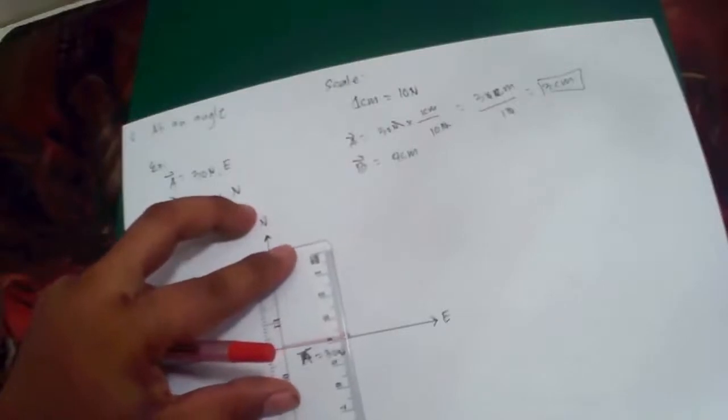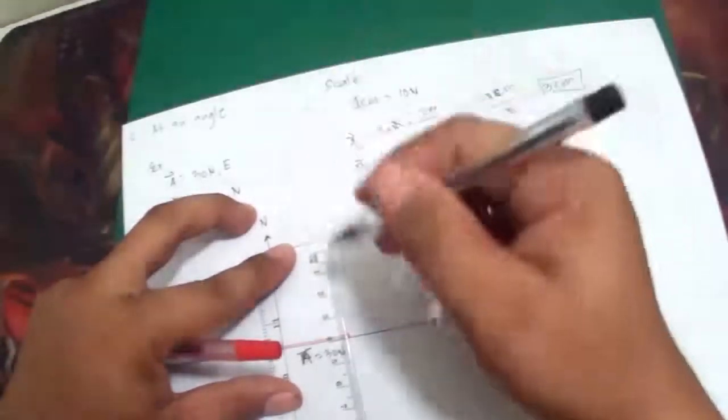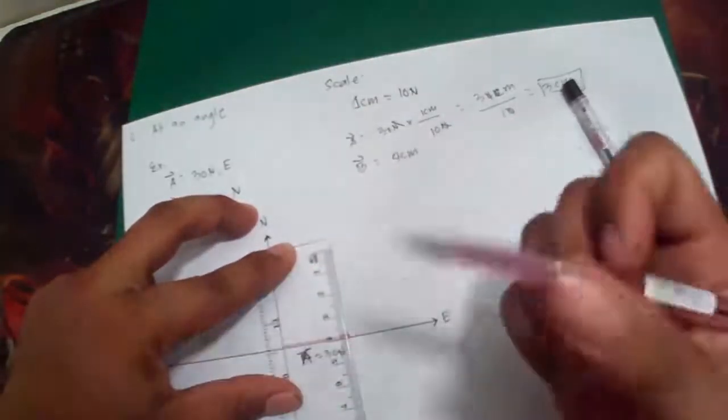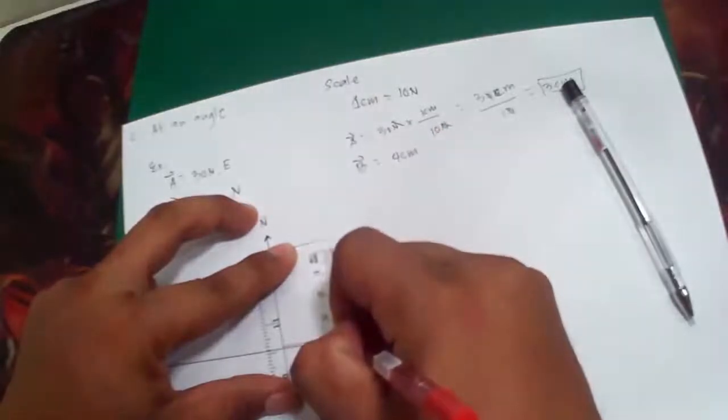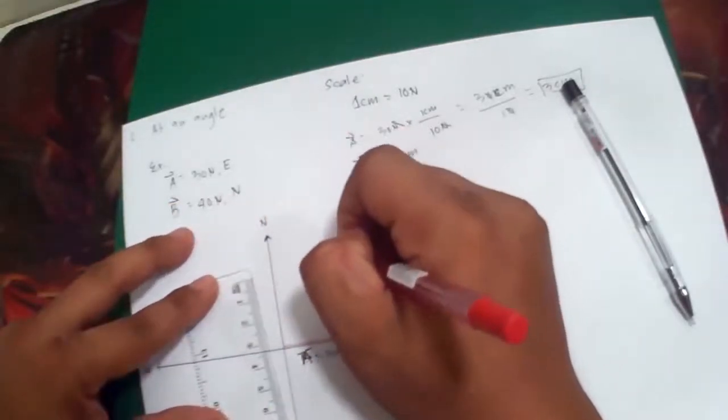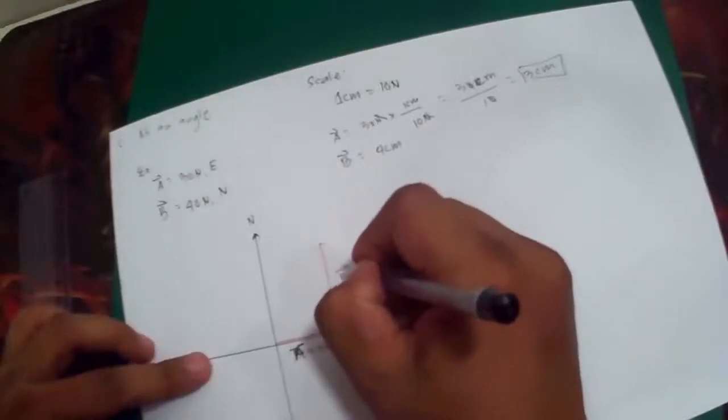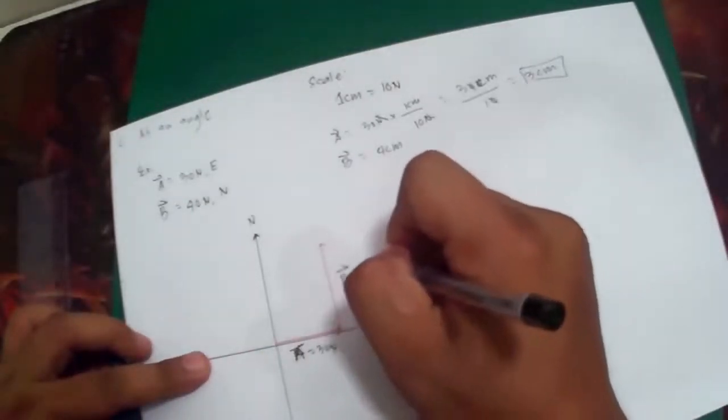So that's 4, this is 4, the north is going upward. So I will use red ball pen here so that you can see. Okay, and this is vector B, vector B is 40 N.